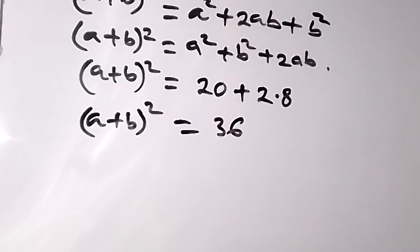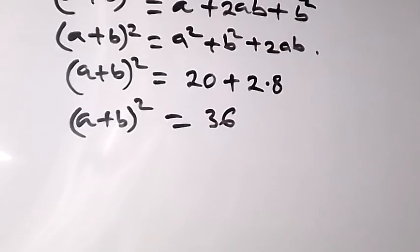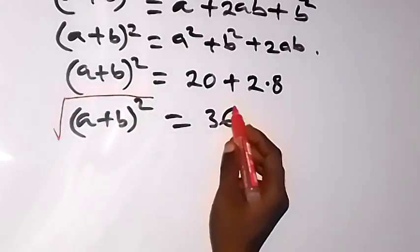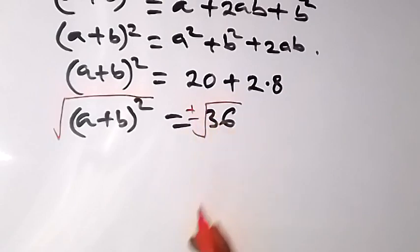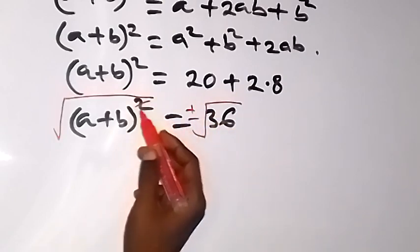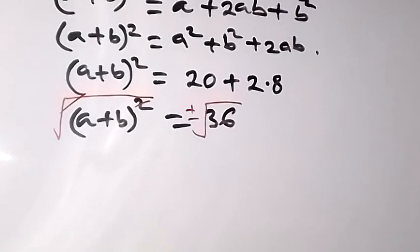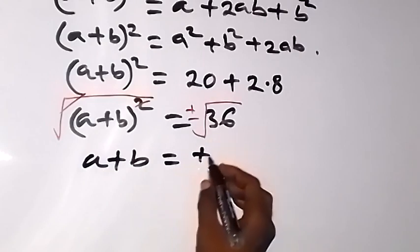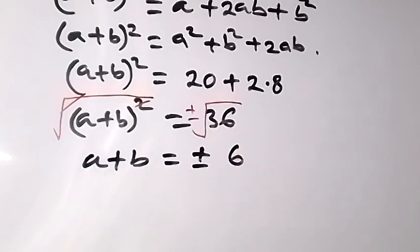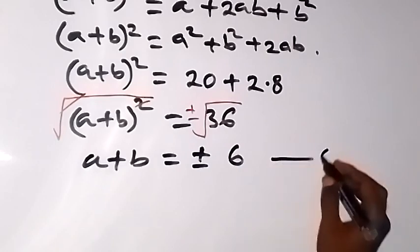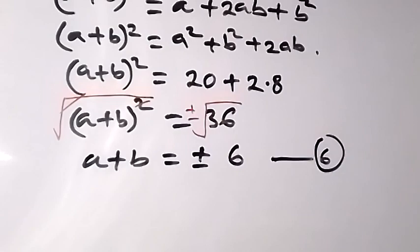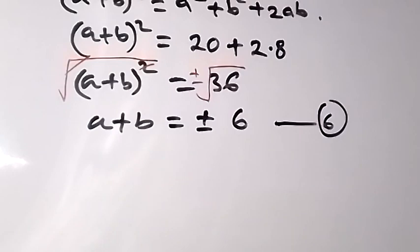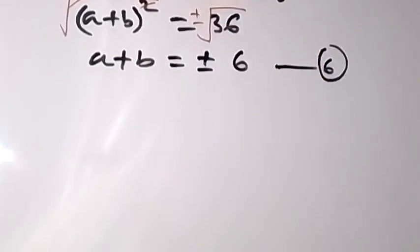And we can get our a plus b. When we take the square root of both sides, the square cancels square root, and we are going to be left with a plus b equals to plus or minus 6. So let's call this equation 6. Now we work with equation 6 and equation 1, and we have two cases here — either plus or minus.